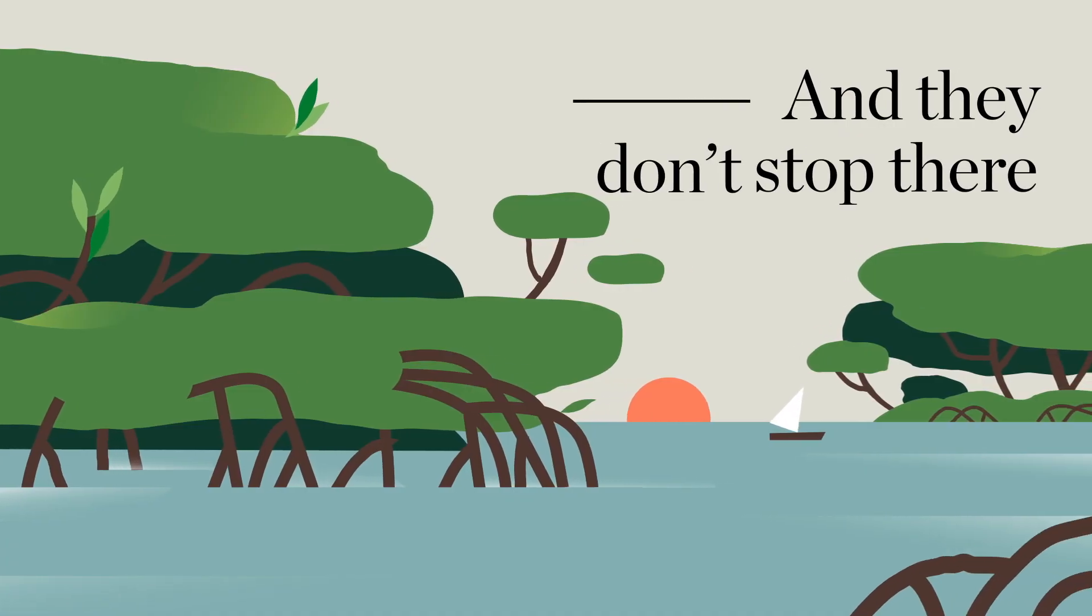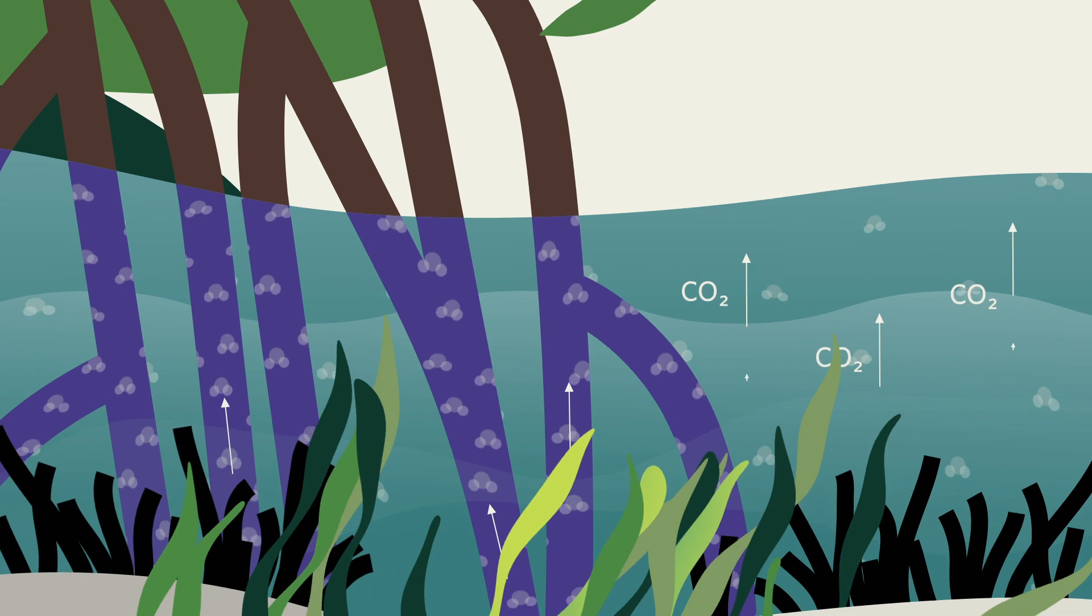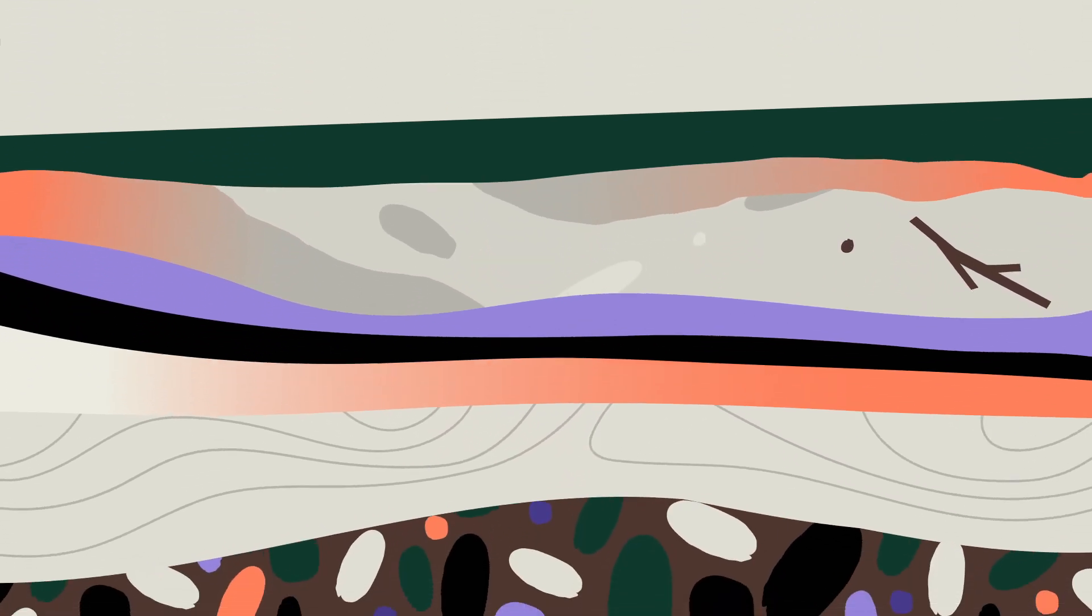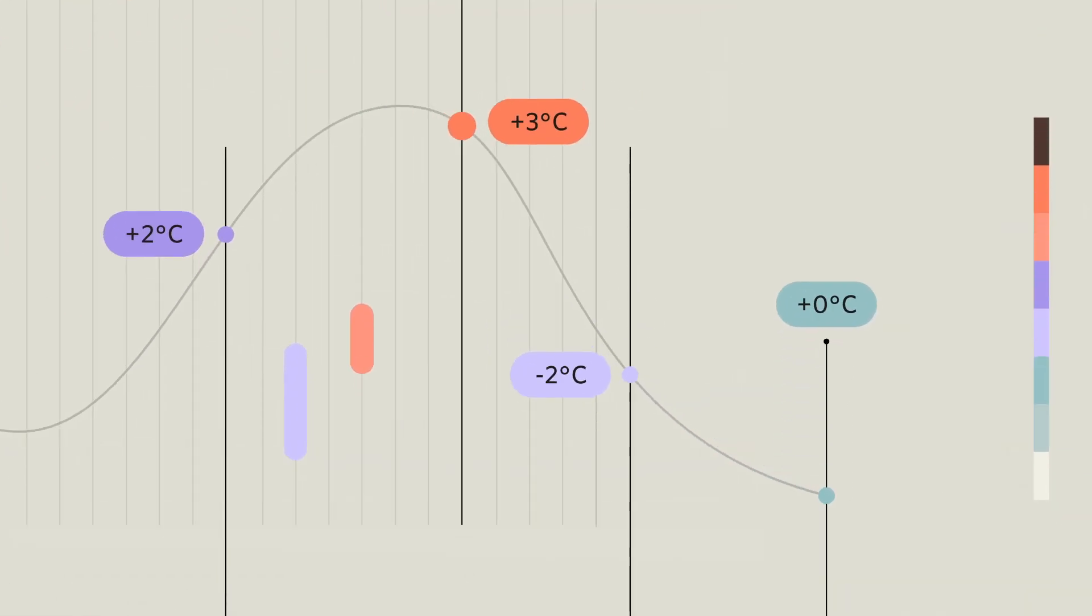And they don't stop there. Using their roots, these wetlands trap the carbon from decomposing plants on the ocean floor, sometimes for thousands of years, keeping it from driving temperatures even higher.